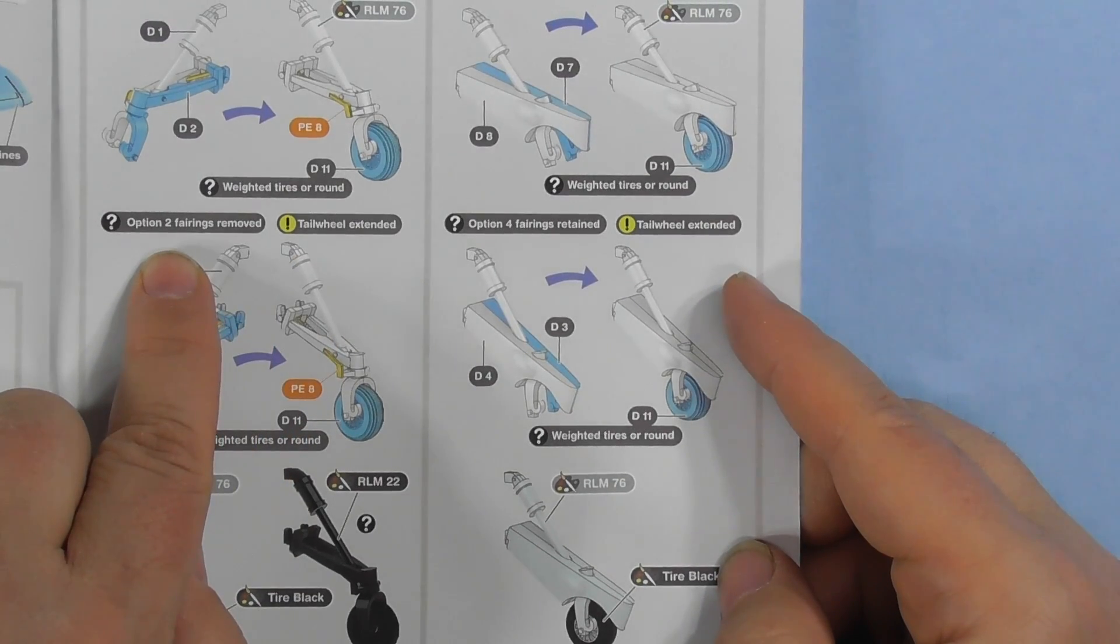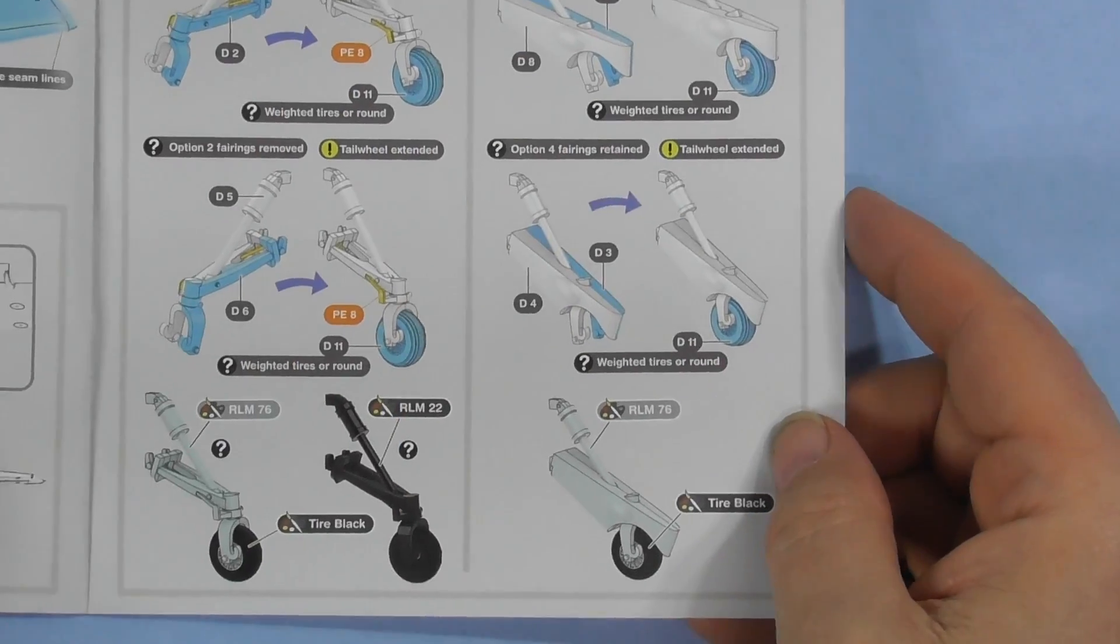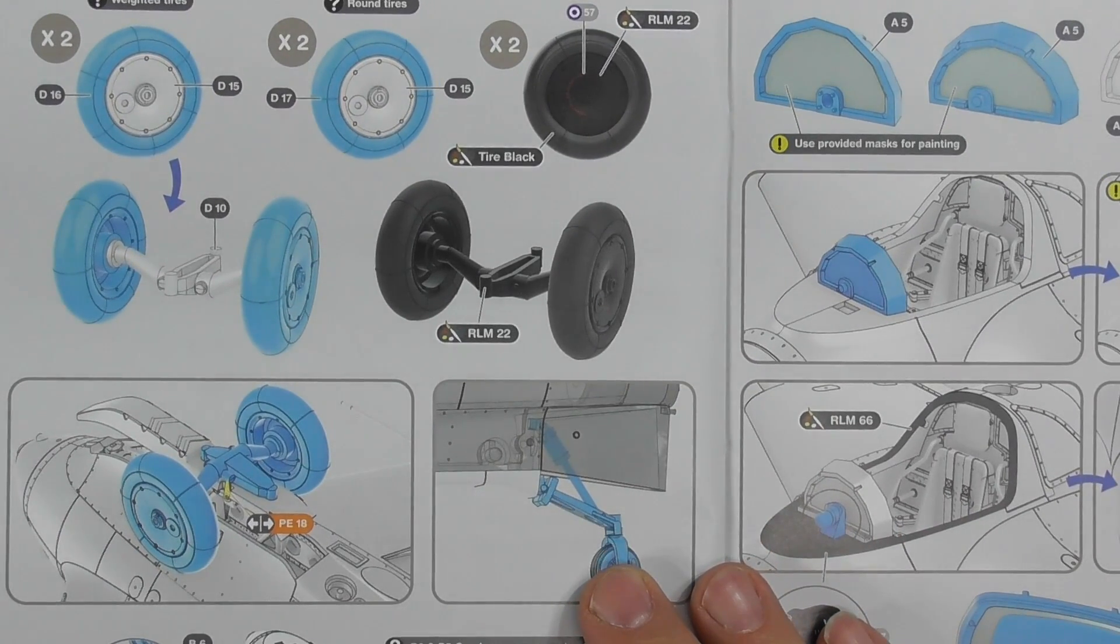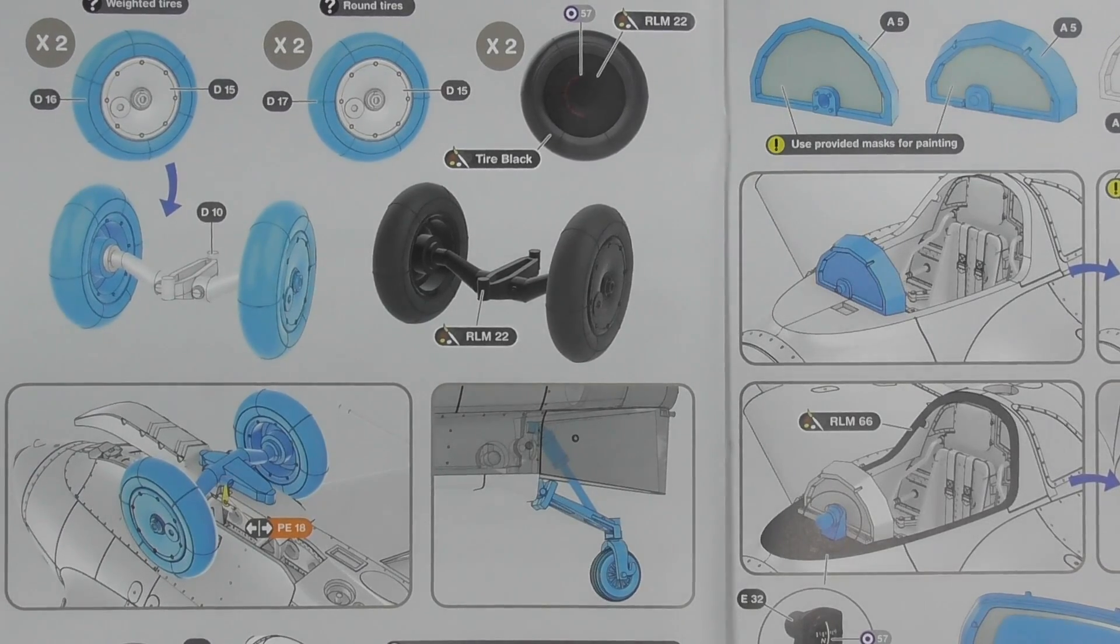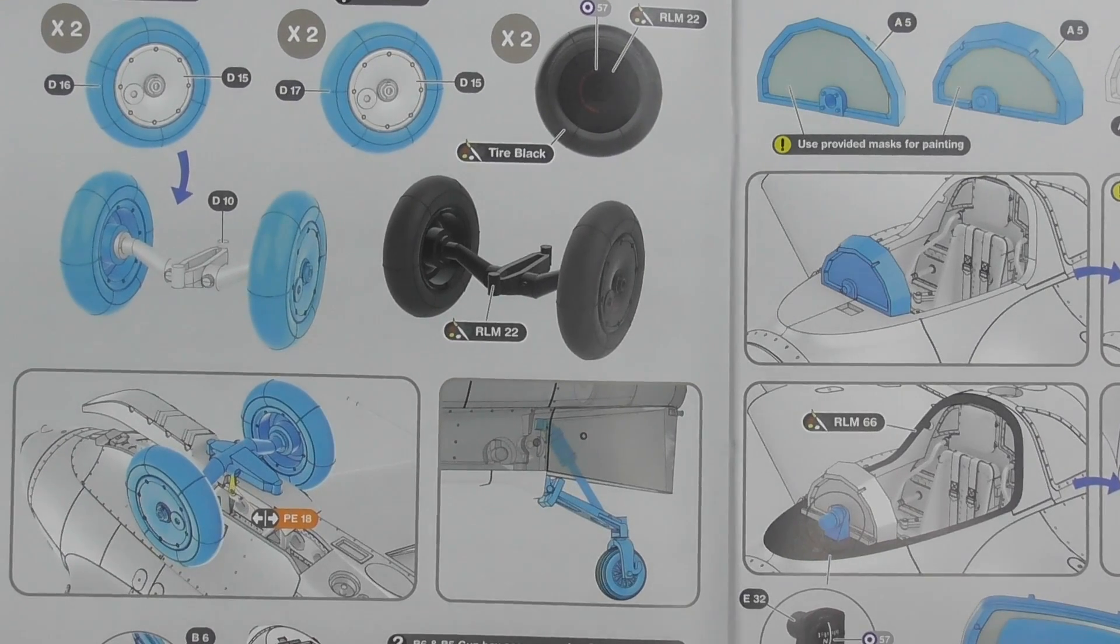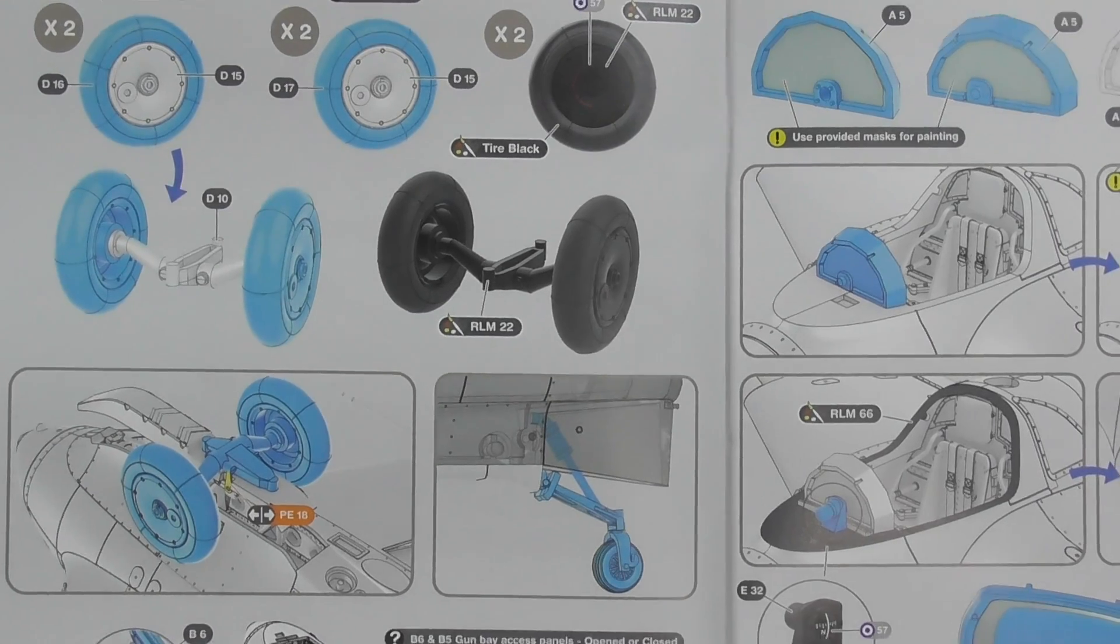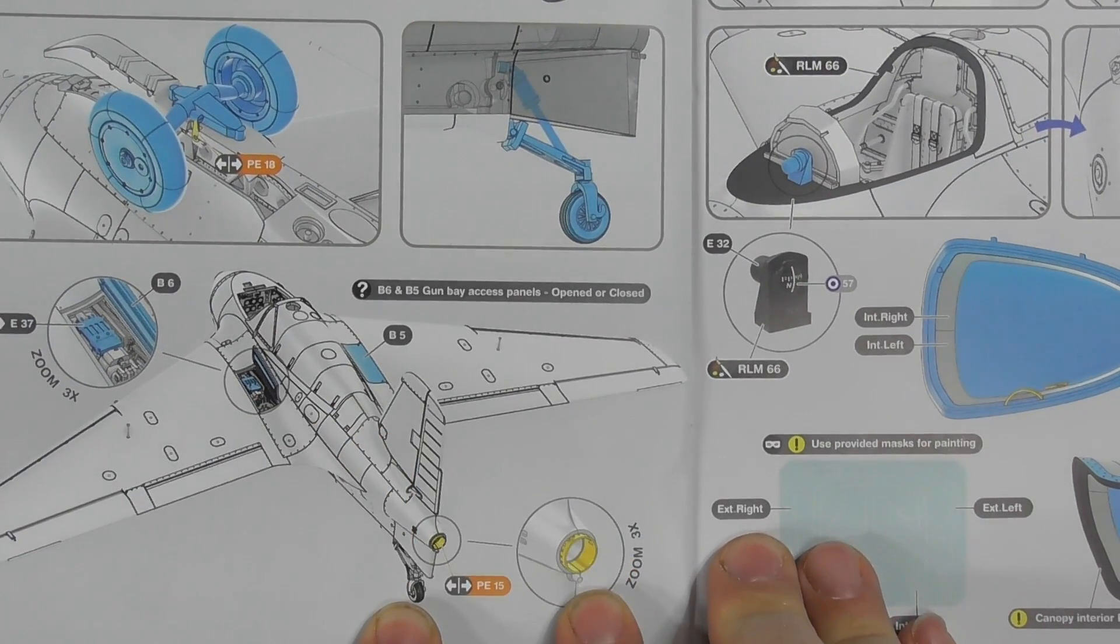Tail wheel extended. So fairings option - fairings removed or fairings in place. So these fairings can be either on or off. There are your weighted tires for your landing gear - sorry, your takeoff gear - which would snap right into the ski. Obviously you wouldn't put those on if the ski's closed. You can have the doors - that's what those panels were for - for your machine gun bay doors you can have open right there. And there's a piece of PE for the nozzle.